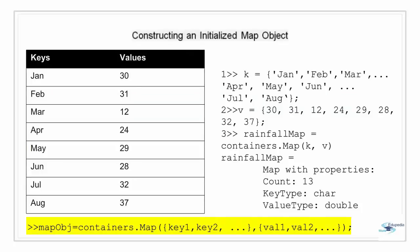Most of the time we do not create an empty map object. We initialize the map with at least some keys and values at the time of construction. We can enter one or more sets of keys and values using the syntax highlighted in yellow, passing individual keys and values in the constructor using curly braces. For character string keys and values, we specify them in single quotation marks. For example, using the month-and-rainfall table, we define variable k for all keys (month names) and variable v for all rainfall values, then pass k and v to the map constructor. The resulting map shows count of 3, key type of character, and value type of double.